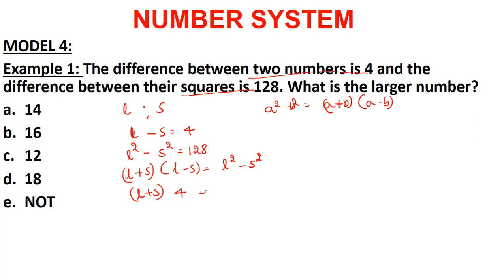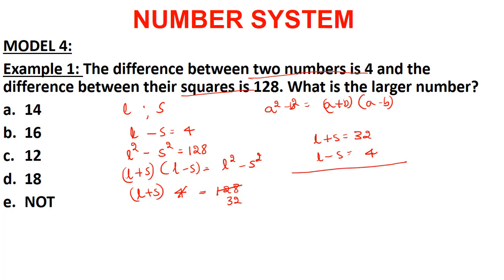We have (l + s)(l - s) = 128. Since l - s = 4, we get (l + s) × 4 = 128, so l + s = 32. Now we have two equations: l + s = 32 and l - s = 4. Adding them: 2l = 36, so l = 18. The larger number is 18.